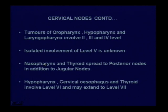Nasopharynx and thyroid spread to posterior nodes in addition to jugular nodes — levels 2, 3, and 4 are involved and level 5 is also involved. For hypopharynx, cervical esophagus, and certain thyroid malignancies like medullary carcinoma thyroid, level 6 is involved and may sometimes extend to level 7 lymph nodes.